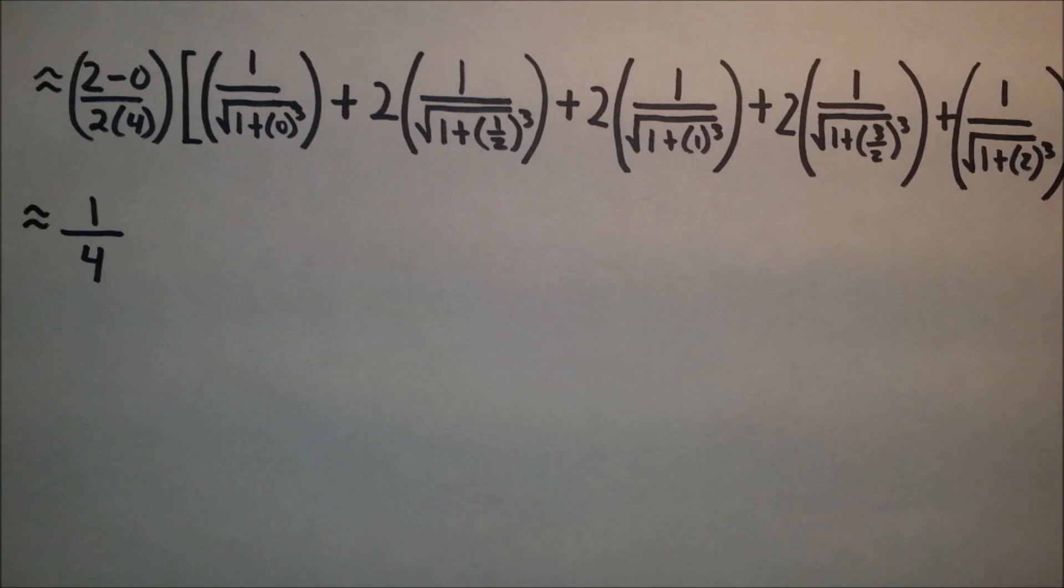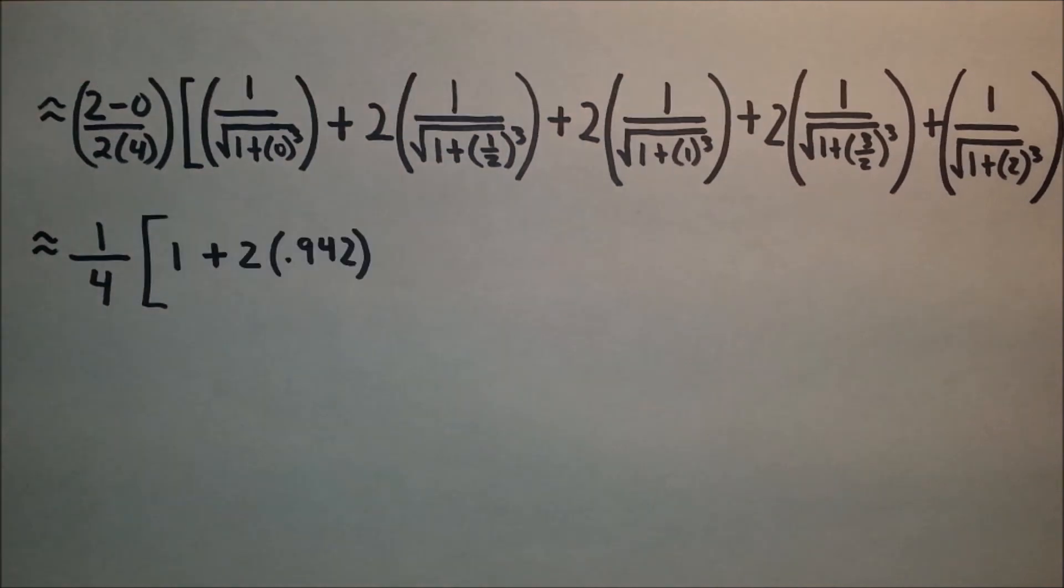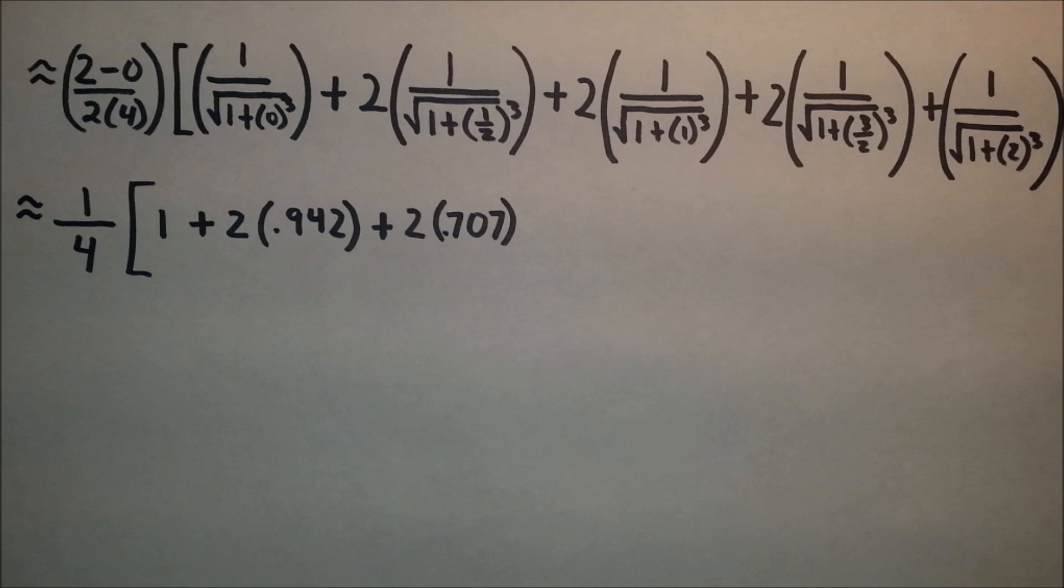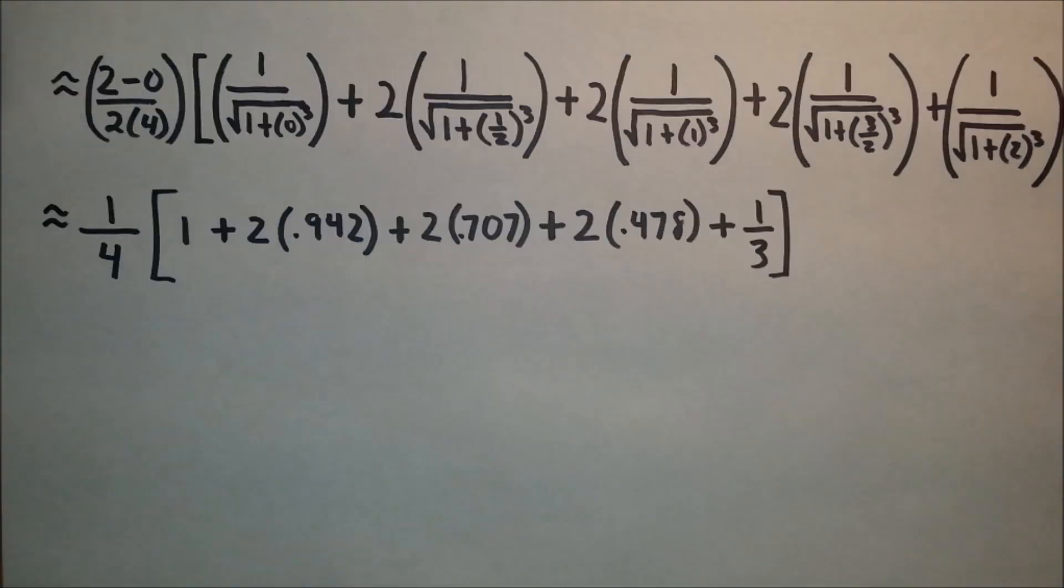So once we do a little reducing, we end up with 1/4 times our x₀, which is 1, plus 2 times 0.942, which is our x₁, plus 2 times 0.707, which is our x₂, plus 2 times 0.478, which is our x₃, and finally 1/3, which is our xₙ.